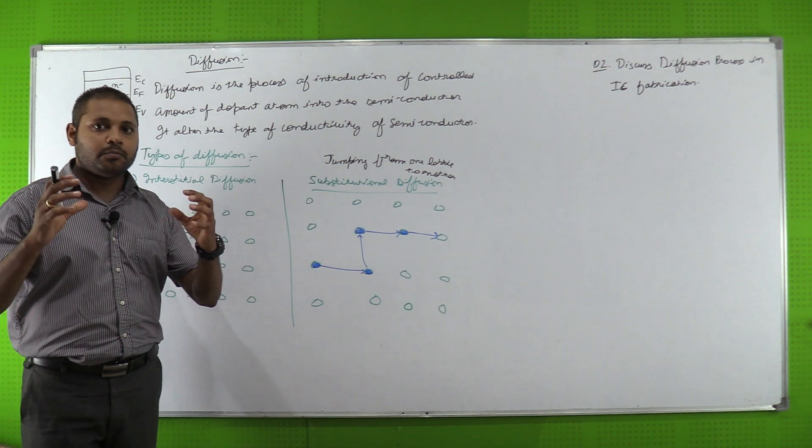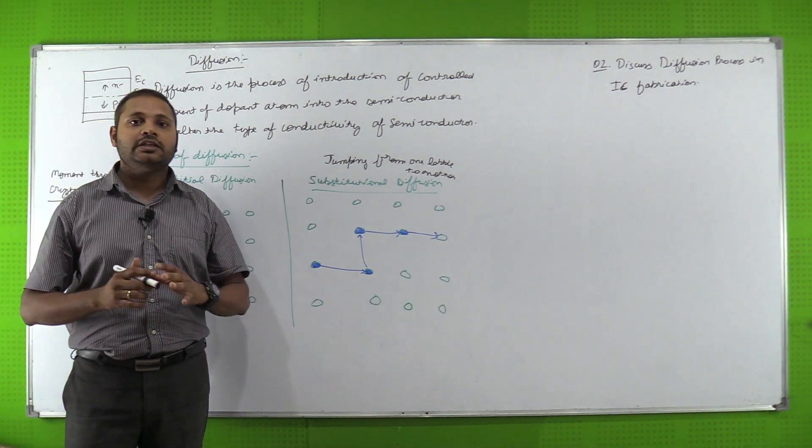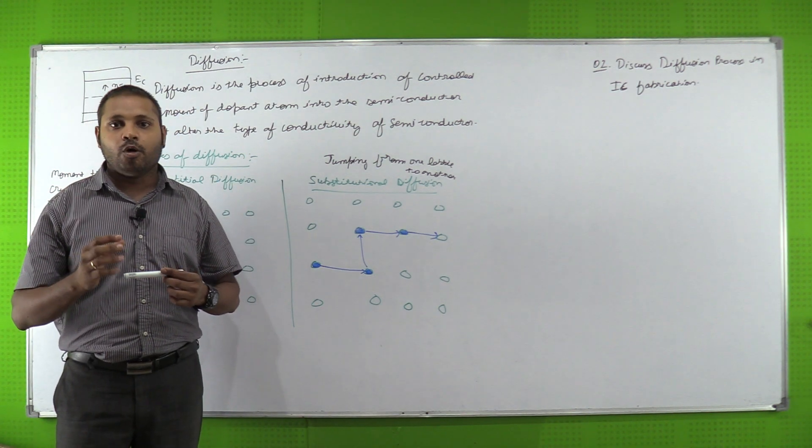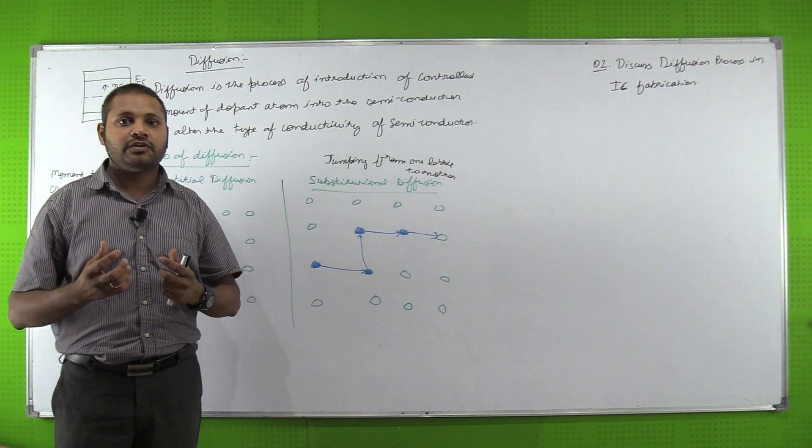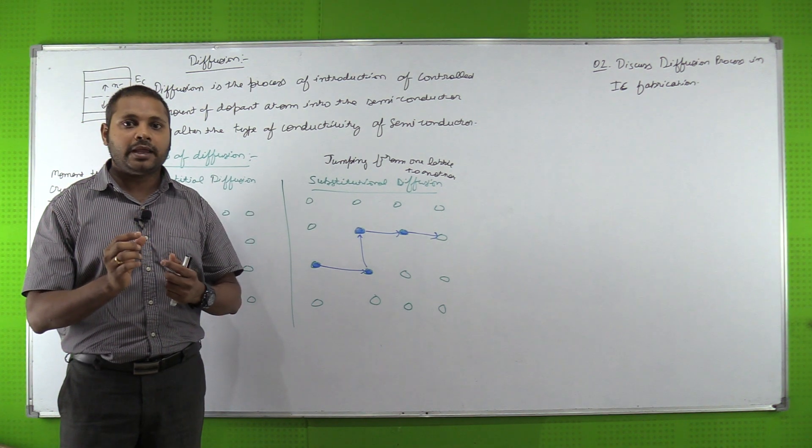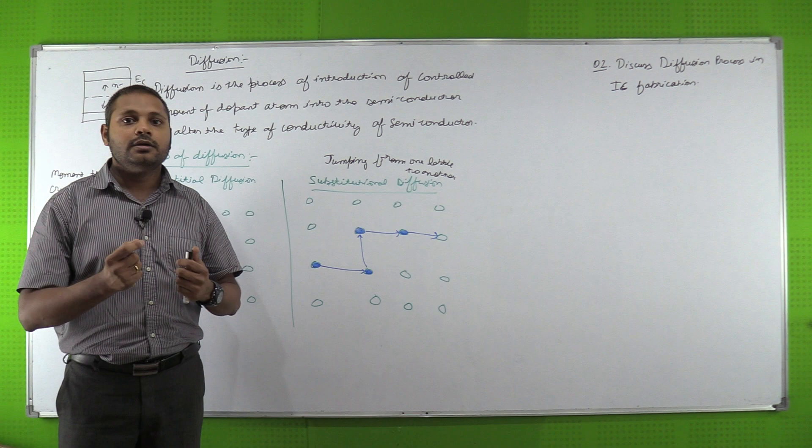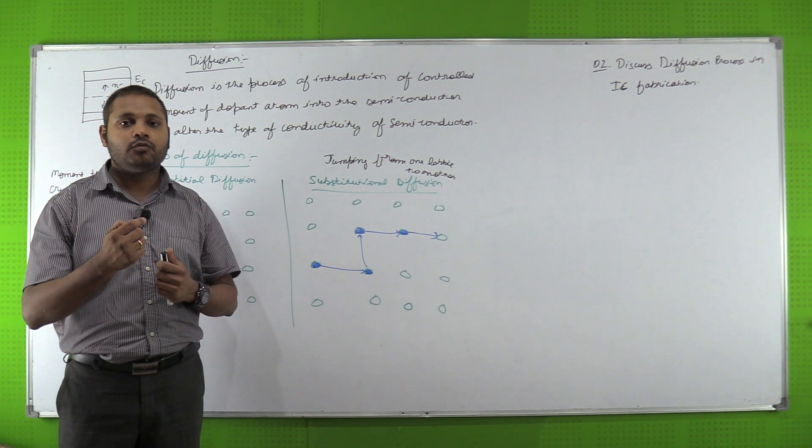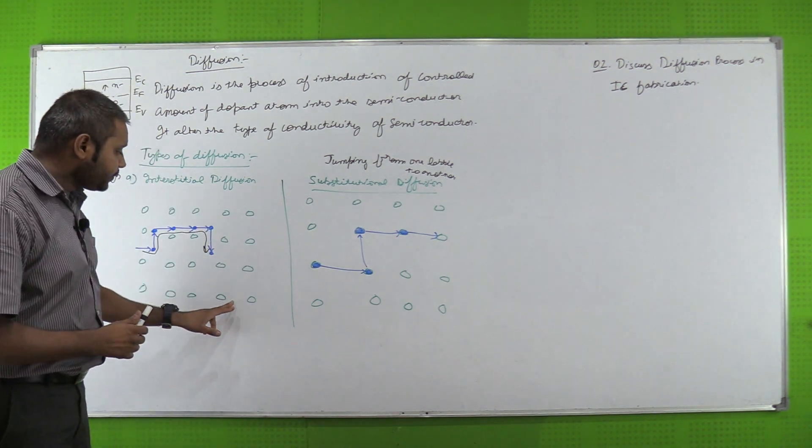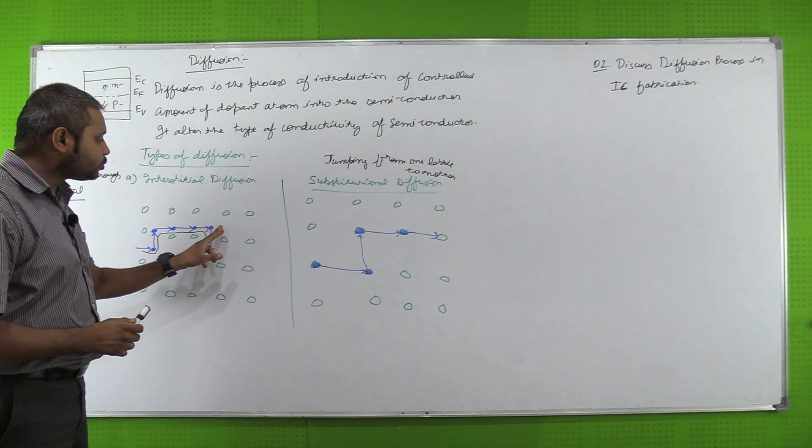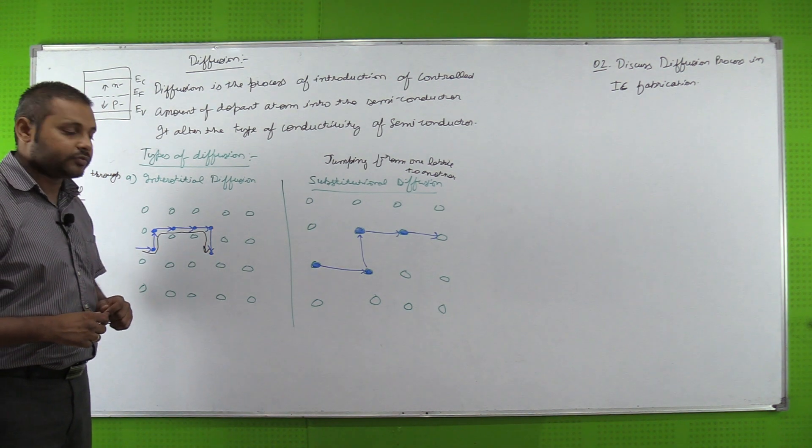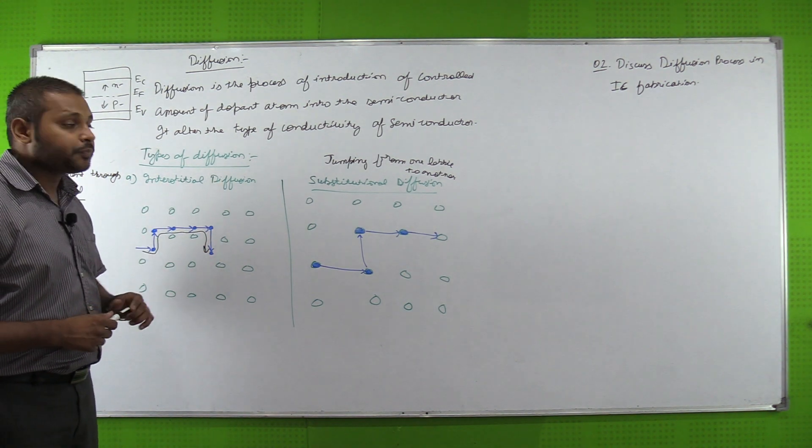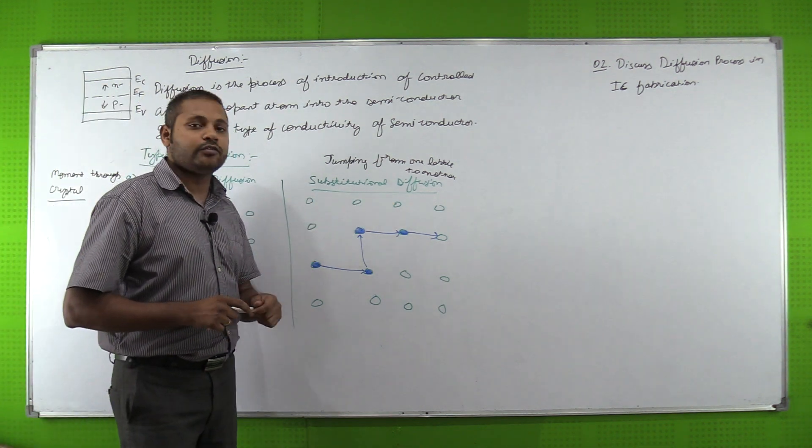Take an example: we have an arrangement of balls in the form of arrays, and when the ball is fixed, the position is fixed. And if we are doing that there is a small small ball, what will happen? The space remaining there is passed and it will reach that particular position. That is called interstitial diffusion.